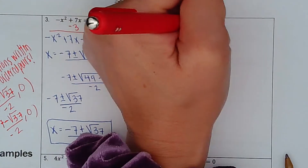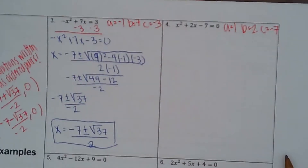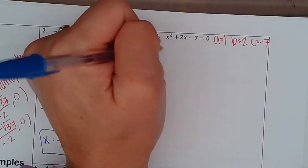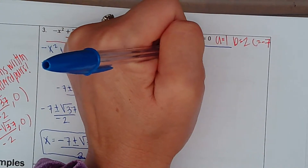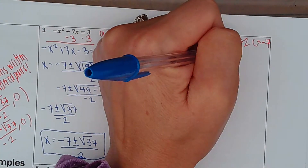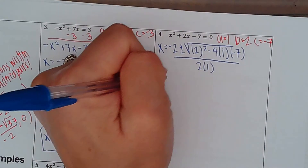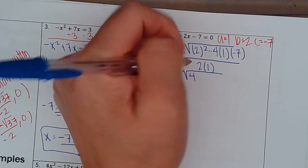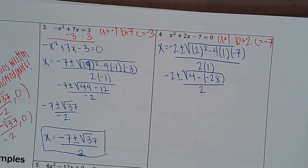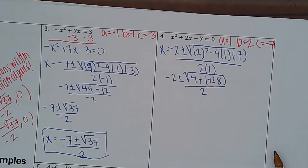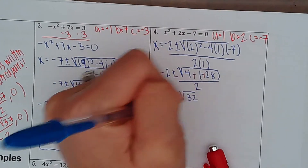It's already written in standard form, so a equals 1, b equals 2, and c equals negative 7. Plugging into the quadratic: x equals negative 2 plus or minus the square root of 2² minus 4 times 1 times negative 7, all over 2 times 1. Simplifying: negative 2 plus or minus the square root of 4 minus negative 28, all over 2. Two negatives make a positive, so we end up with negative 2 plus or minus the square root of 32, all over 2.